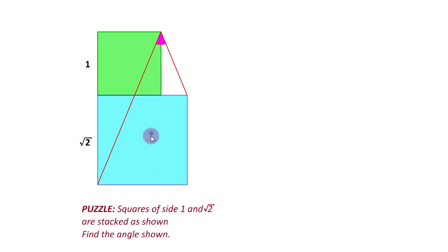The problem has these two squares. The dimensions happen to be 1 and square root 2. And then there is this angle starting from the lower vertex of this lower square to the top vertex of the top square to this point here. And that angle is to be found.